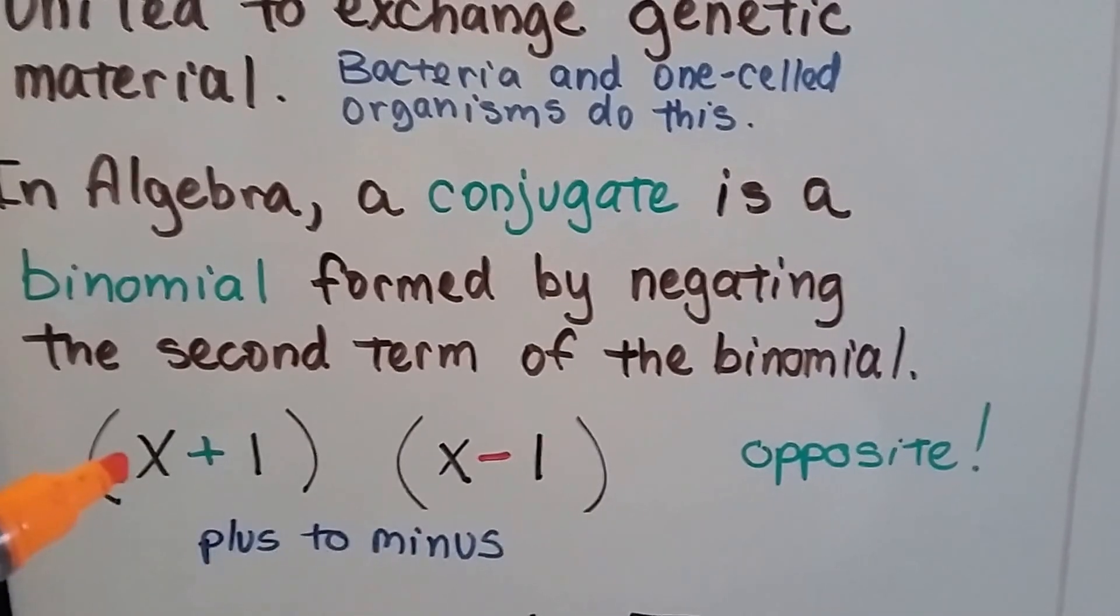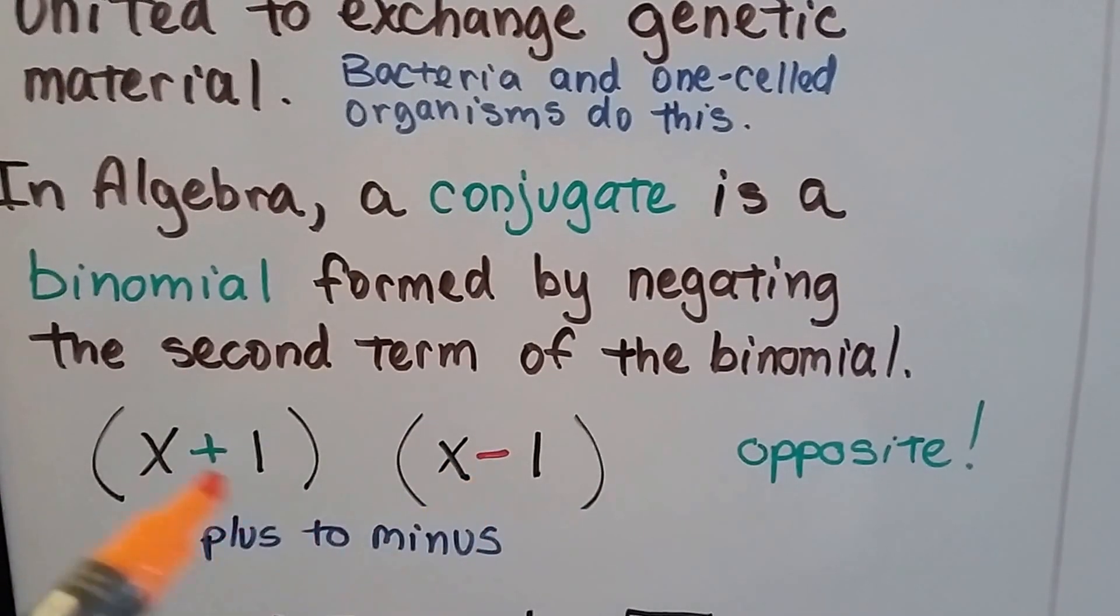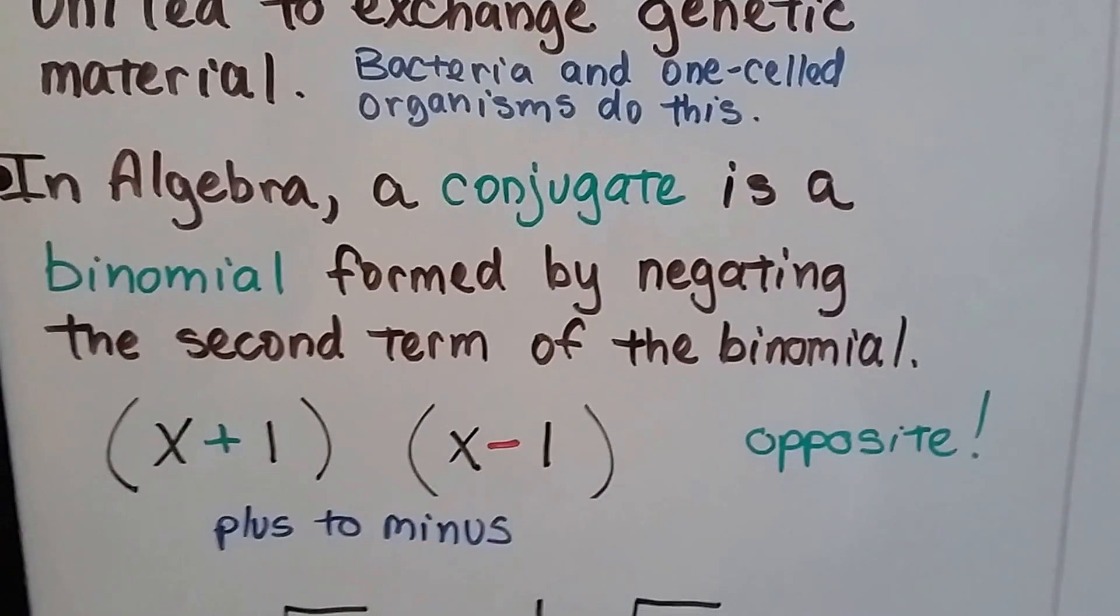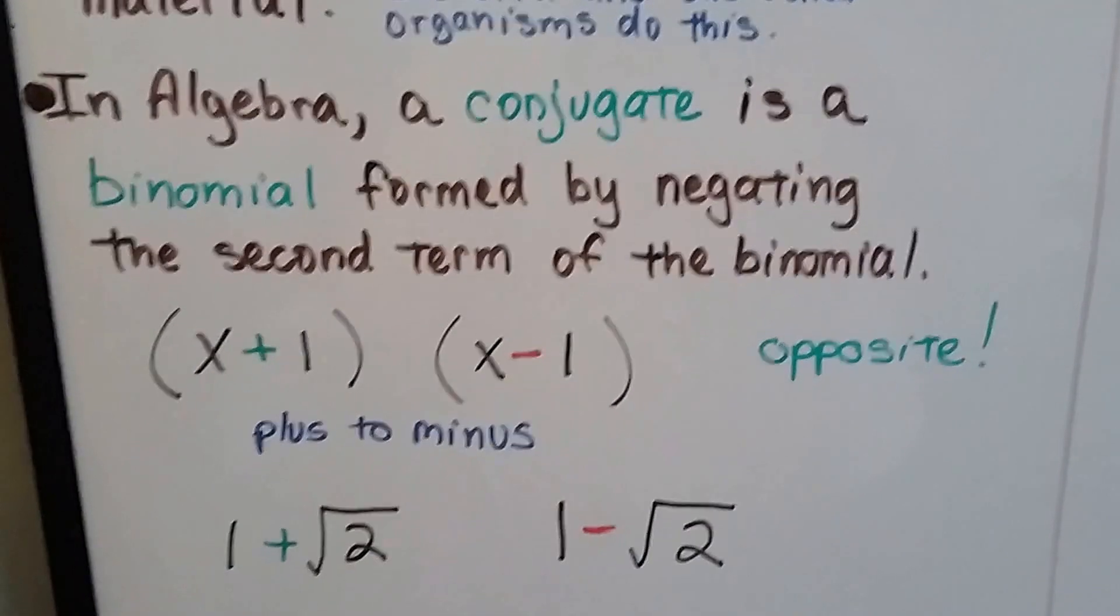So if you have x plus 1, we would have x minus 1. See? It negates the first one. It makes it a negative. It goes from plus to minus. They're opposites. It could even be from minus to plus.